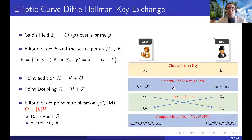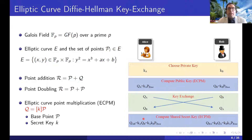Alice and Bob each compute their own public key by performing the ECPM function, and then in the key exchange mechanism they exchange their public keys. In the last stage, they again compute another ECPM using their own private key and the other party's public key. This computation results in the same shared point QAB and QBA, which serves as a shared secret key that can be used in other crypto primitives such as AES to encrypt and decrypt data.